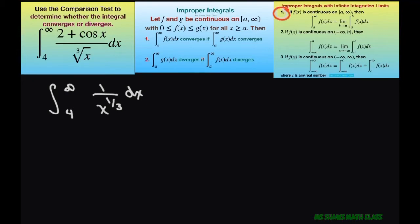So I can write this as the limit as b approaches infinity, and replace infinity with b. I'm going to write this as x to the power of negative 1 third dx from 4 to b.